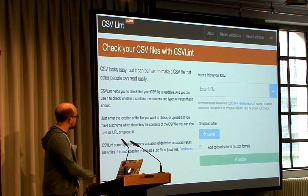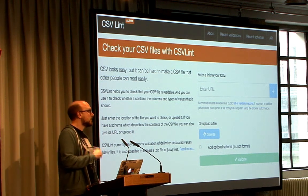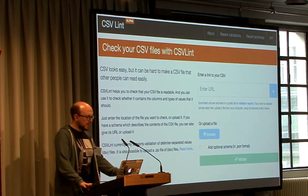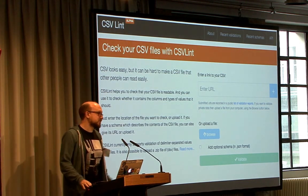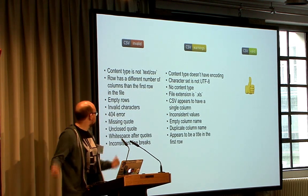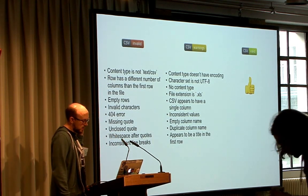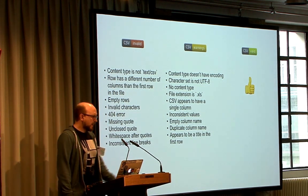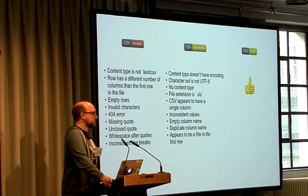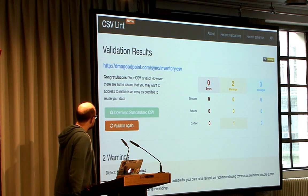So this inspired us to build CSV Lint, which I think a couple of people have talked about. If there's anyone who was at CSV Conf the year before last, my colleague James did a talk about this. We had some funding from central government to do it. It allows you to upload a CSV or specify a URL and see how reuse-ready your CSV is. There's a selection of warnings and errors that we checked for — things like content type if it's hosted on the web, invalid characters, inconsistent values, blank rows. So you can go and check your CSV and get your results.